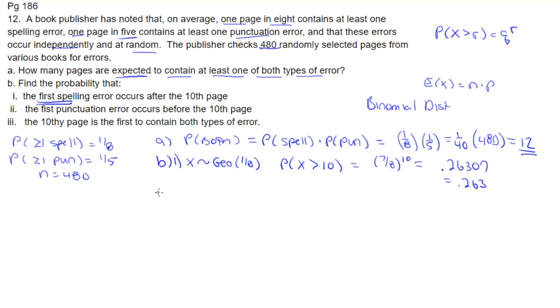And then part two of B, the first punctuation error occurs before the 10th page. This is also geometric. And it's changing. Now we're talking about punctuations. Probability is 1/5.